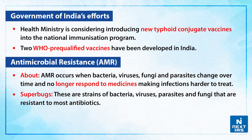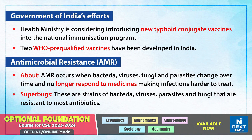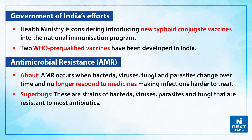Now let us discuss some of the Indian government's initiatives in this regard. First, the health ministry is considering introducing new typhoid conjugate vaccines into the national immunization program. A conjugate vaccine is a subunit vaccine that combines a weak antigen and a strong antigen as a carrier so that the immune system has a stronger response to the weaker antigen. An antigen is any substance that causes the immune system to produce antibodies against it. Secondly, two WHO pre-qualified vaccines have been developed in India.